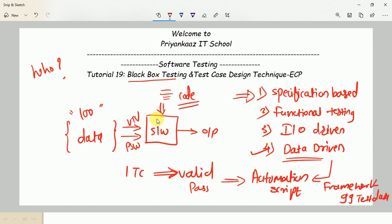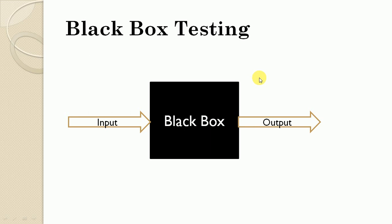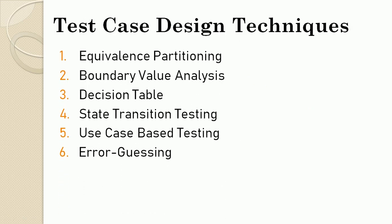To perform black box testing, we need to understand the test case design techniques. There are six different techniques available: (1) Equivalence Partitioning (EP/ECP), (2) Boundary Value Analysis, (3) Decision Table, (4) State Transition Testing, (5) Use Case Based Testing, and (6) Error Guessing, which is an experience-based testing type.